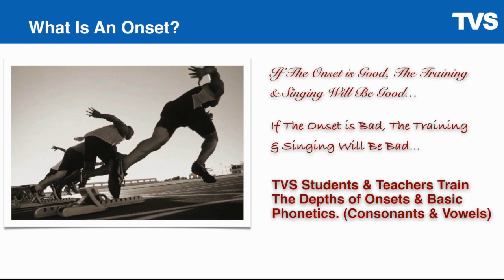So if we back up: onsets means the start. It's our version of the tennis serve, the baseball pitch, or just leaping off the blocks in a track race. If that start is good, then the singing or training will be good. If the start is bad, then the training will be bad. And because every onset begins with a vowel or some kind of consonant, we begin to understand some of the secret code about singing better and fixing problems in your voice — and it's found in the phonetics. To understand onsets is to understand phonetics.